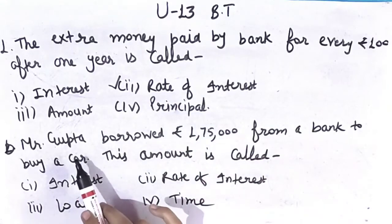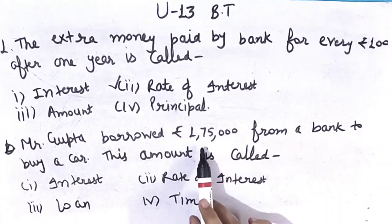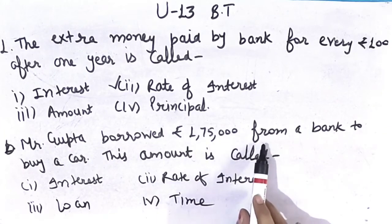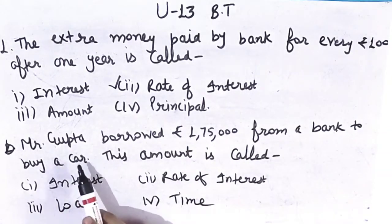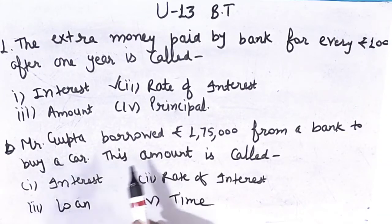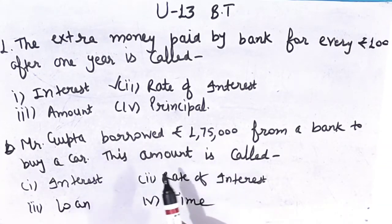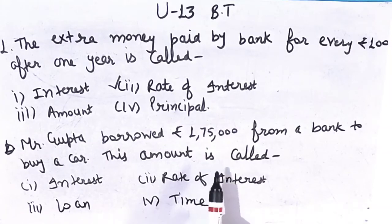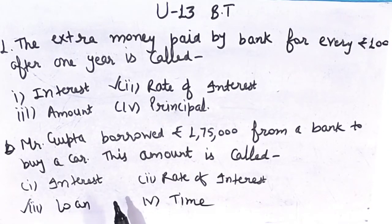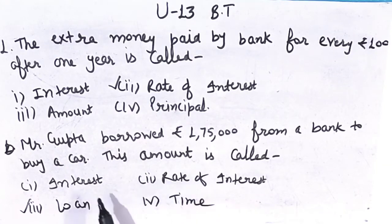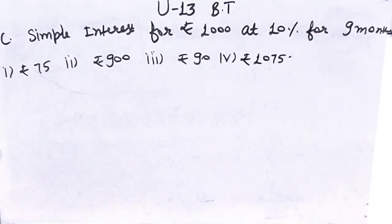Next: Mr. Gupta borrowed rupees 1,75,000 from a bank to buy a car. Mr. Gupta purchased a car by borrowing 1 lakh 75,000 rupees from the bank. This amount is called — loan. This means Mr. Gupta took a loan from the bank.